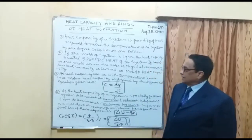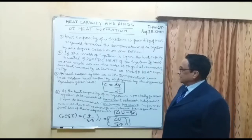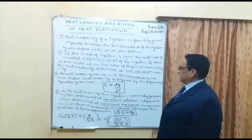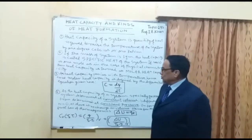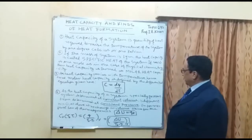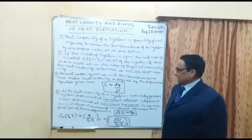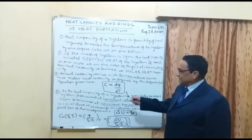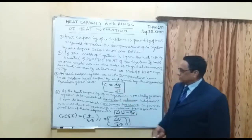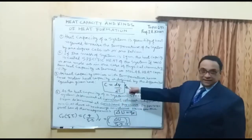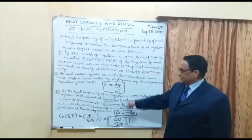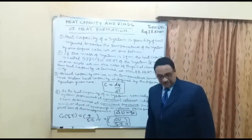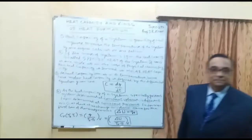Number three: as heat capacity varies with temperature, the true molar heat capacity is defined by the differential equation. Heat capacity is equal to dQ divided by dT. Number four: the heat capacity at constant volume means work done W is equal to zero. From the first law of thermodynamics, delta U equals QV, and CV times (T₂ − T₁) equals Q over (T₂ − T₁) equals delta U over (T₂ − T₁) at constant volume.